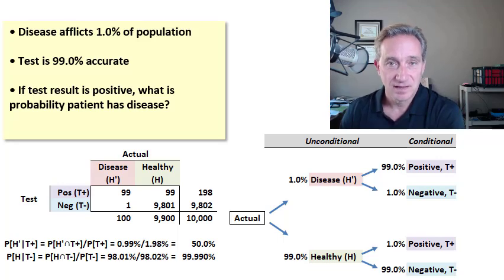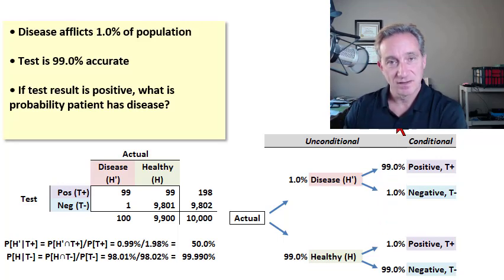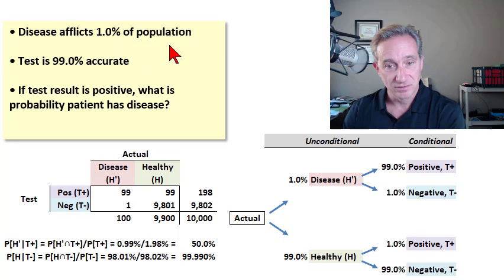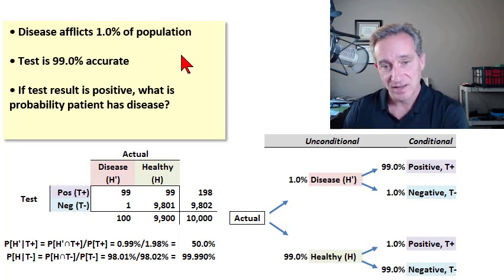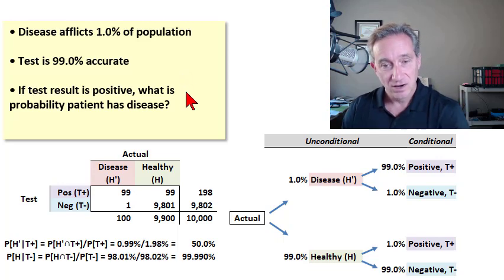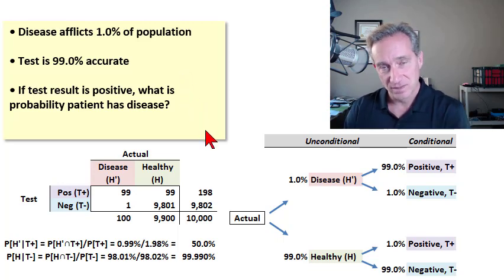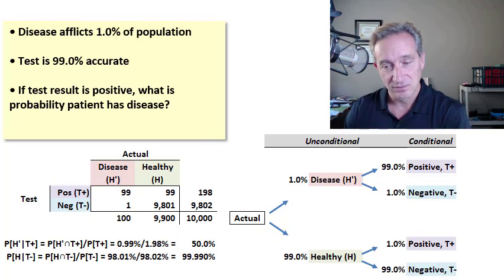Bayes Theorem lets us update a probability with new evidence. For example, if there's a disease that afflicts 1% of the population and we have a test that is 99% accurate, if our test result is positive, what is the probability that the patient has the disease?